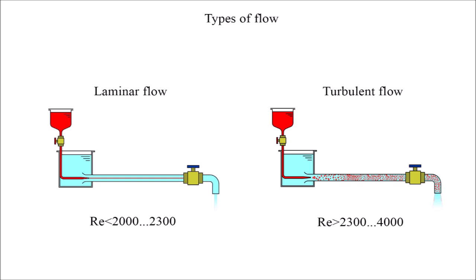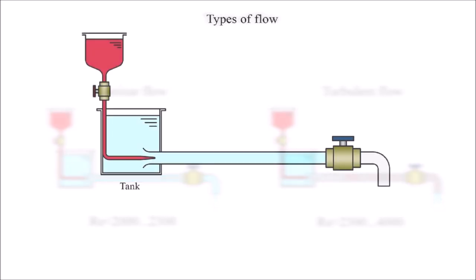It also depends on the cross-sectional area through which flow occurs. Liquid from the tank enters the transparent pipe. The flow rate is regulated by a valve. The ink enters the center of the pipe through a thin tube.